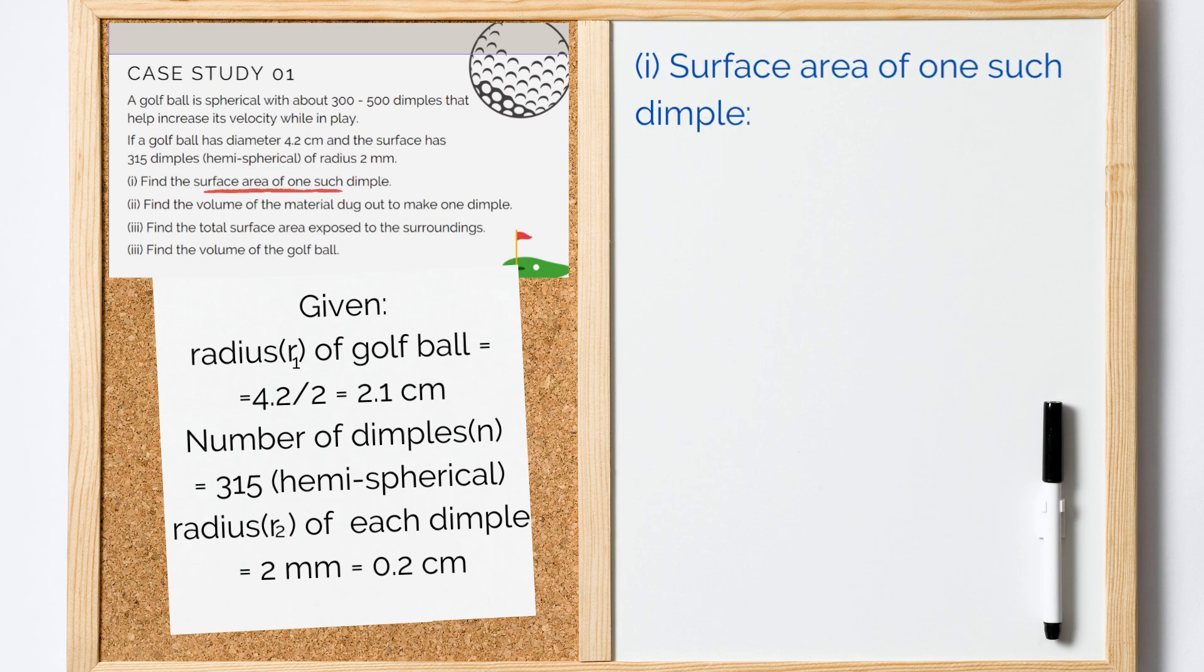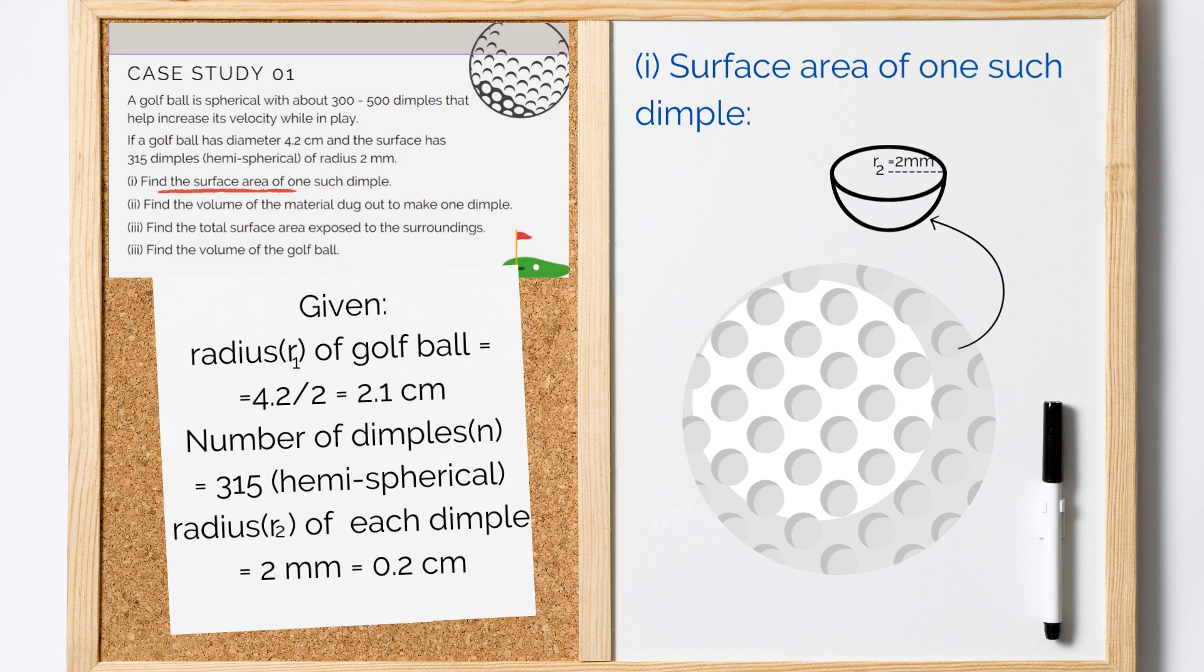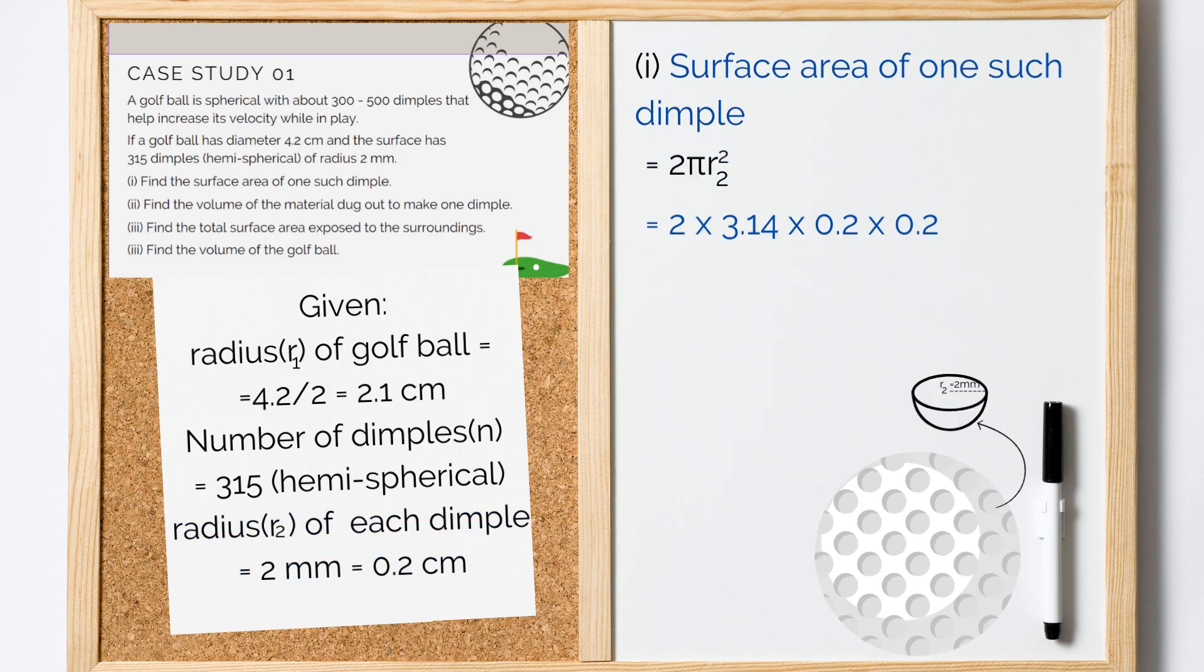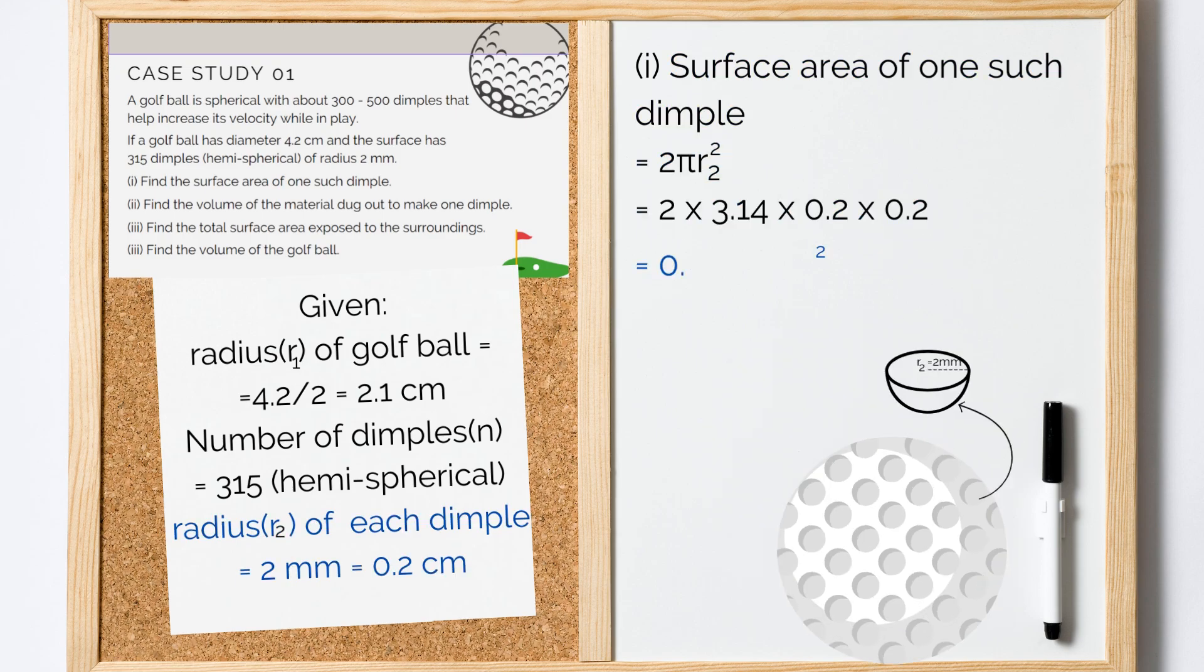Surface area of one such dimple would be the surface area of a hemisphere with radius 2 mm, which is 2πR2² which gives us 2 × 3.14 × 0.2 × 0.2 which is 0.2512 cm². Quite simple, right? Let's go to the next part now.